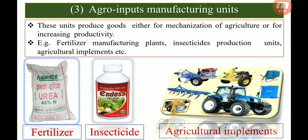The third on-farm activity is agro-input manufacturing units. These units produce inputs for agriculture, such as fertilizers, insecticides, and agricultural implements. The units produce goods either for the mechanization of agriculture or for increasing productivity.